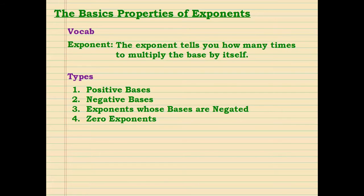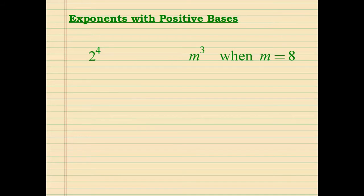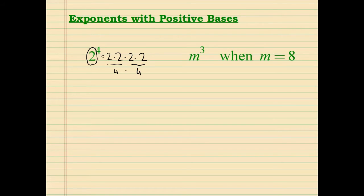The four types are: exponents with positive bases, exponents with negative bases, bases that are negated, and zero exponents. Exponents with positive bases is the first one we'll cover. If you have 2 to the 4th power, the base is what the exponent is touching — the exponent only affects what's in the base. So 2 to the 4th power equals 2 times 2 times 2 times 2, which is 4 times 4, equal to 16.